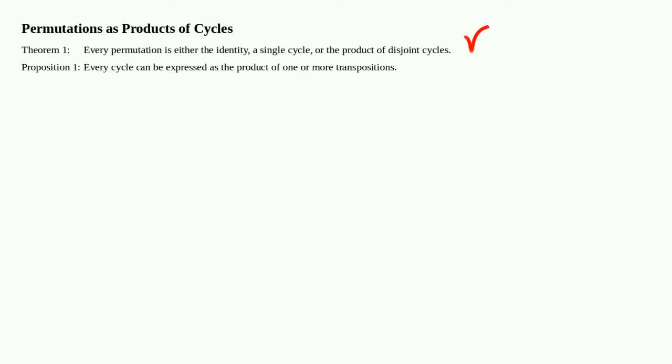We're going to resume our discussion of permutations as products of cycles. Previously we proved the theorem that every permutation is either the identity, a single cycle, or the product of disjoint cycles. What we'll prove this time is the proposition that every cycle can be expressed as the product of one or more transpositions — that's a big deal.